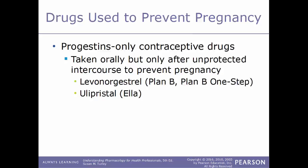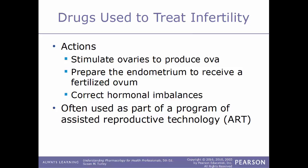Now we'll talk about drugs that are used to treat infertility. In general, these drugs will stimulate the ovaries to produce ova, prepare the endometrium to receive a fertilized ovum, and correct any hormonal imbalances. These are often used as part of a program of ART, assisted reproductive technology.